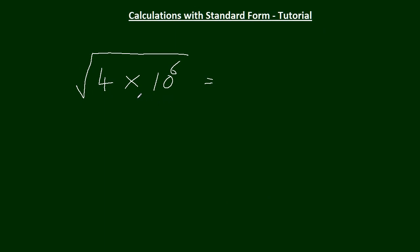To do this one, I would change it slightly to this. And a square root is really raising something to the power of a half. Rules of indices, 6 times a half, 10 to the 3. Square root of 4. 2 times 10 to the 3.